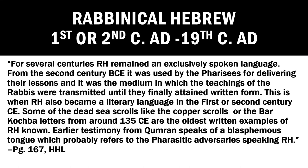Rabbinical Hebrew remained an exclusively spoken language for several centuries from the 2nd century BCE, used by the Pharisees for delivering their lessons and transmitting the teachings of the rabbis until they finally attained written form. RH also became a literary language in the 1st or 2nd century CE. Some of the Dead Sea Scrolls — like the Copper Scroll and the Bar Kokhba letters from around 135 CE — are the oldest written examples of RH known. Earlier testimony from Qumran speaks of a 'blasphemous stone,' which probably refers to the Pharisaic adversaries speaking RH, or at least an early form of it.